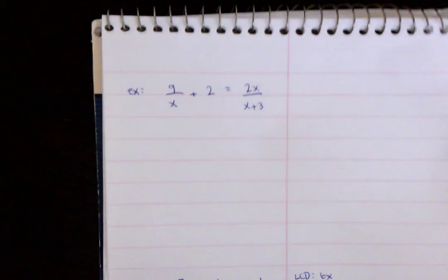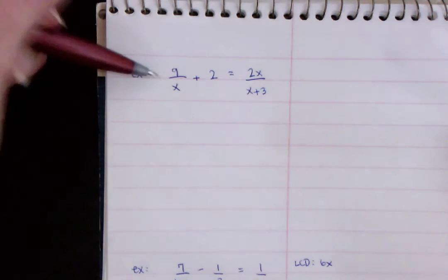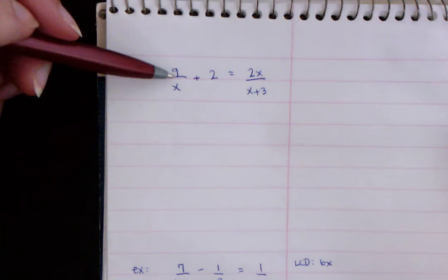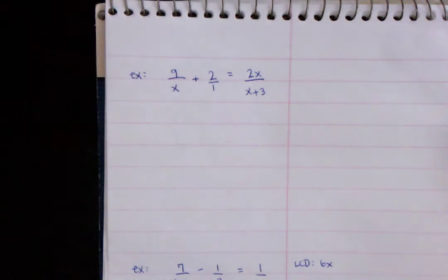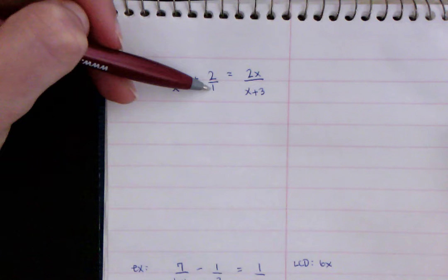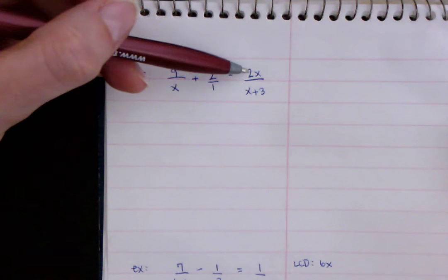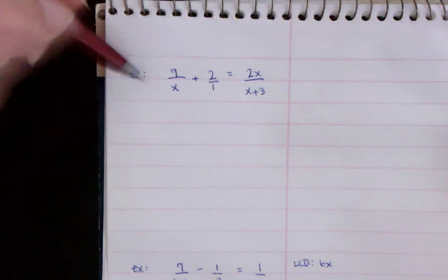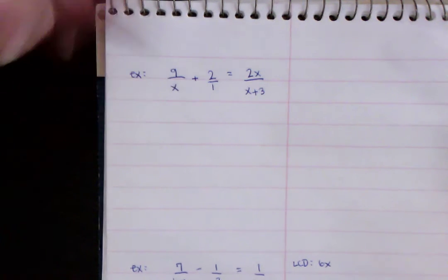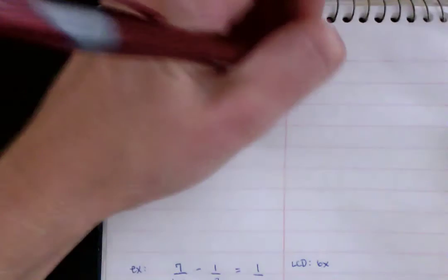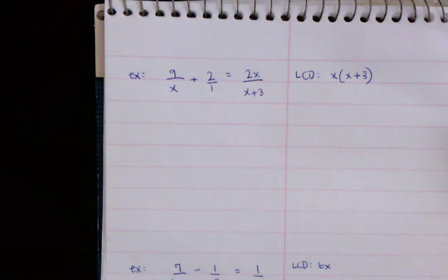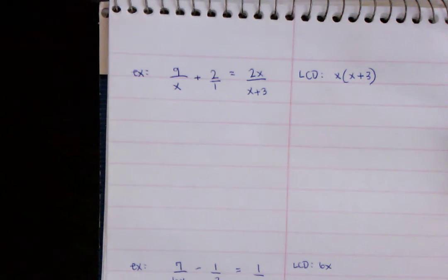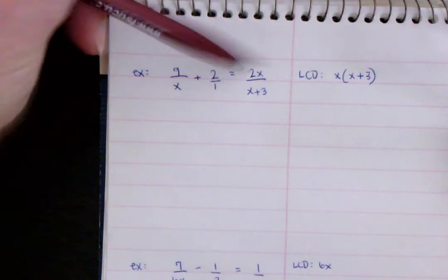So now let's go back up to this one. All right. So now we're going to multiply by the LCD, just like we did down there. Now this LCD, if you look at this, this is 9 over X plus 2 over 1, technically, equals 2X over X plus 3. So now I know these are both completely different factors. So I need the LCD then to include both of them. So my LCD is going to be this. And don't worry about multiplying that out. Just leave it like this.